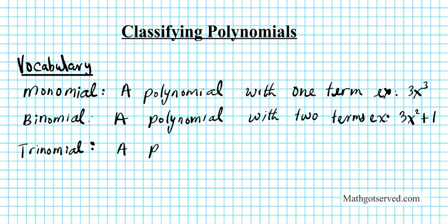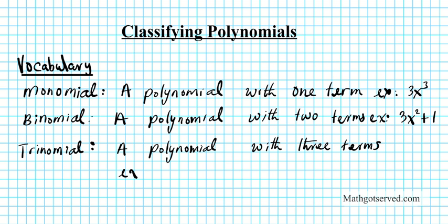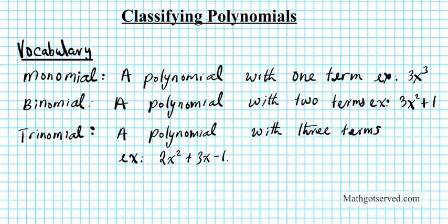So a trinomial is a polynomial with three terms. An example of a trinomial is your standard quadratic expression: 2x squared plus 3x minus 1. That's an example of a trinomial.